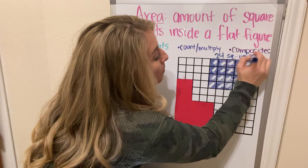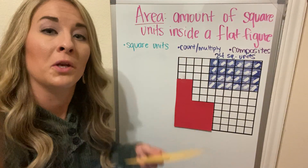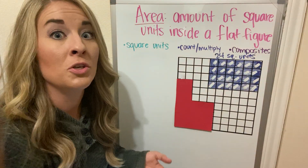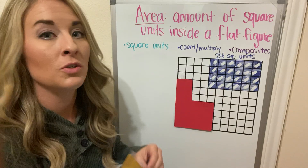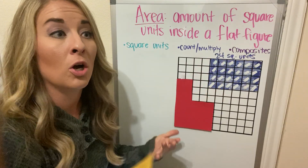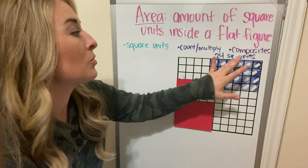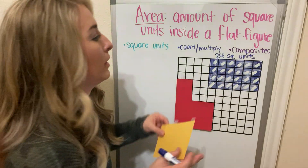If you don't put the word 'square' and you're just putting 'units,' it is unknown what you're determining. As soon as you put the word 'square,' we know you're finding the area. So the word 'square' is very, very necessary.